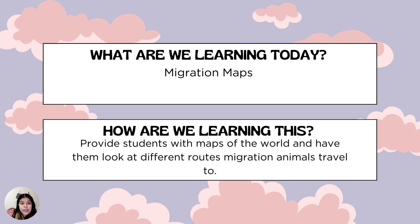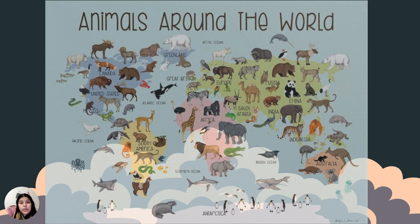The students are also going to get a map. We're going to provide students with maps of the world and have them look at different migration routes that animals travel. As you can see, I put animals all around the world, and we can see which animal belongs where. Most of these animals don't migrate, but some do, so we can see which animal will travel from one part of the world to another continent or area.